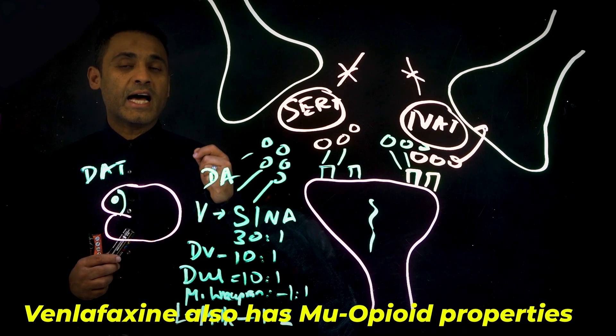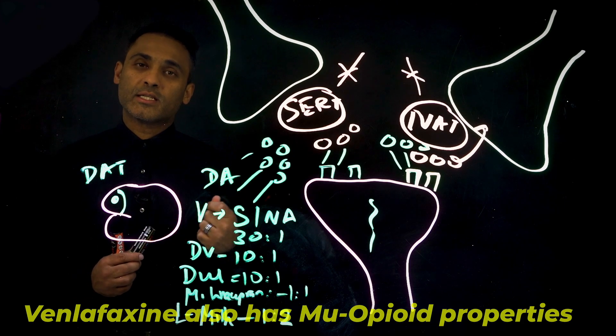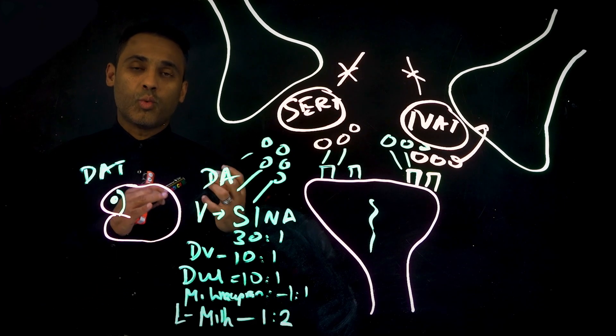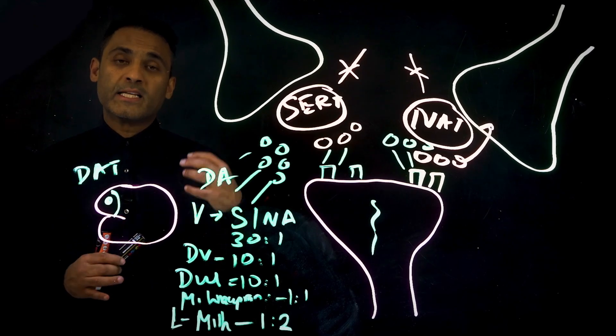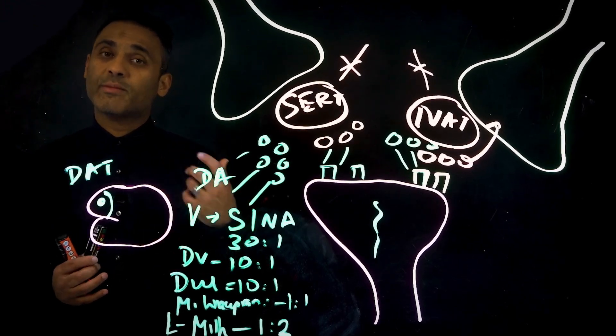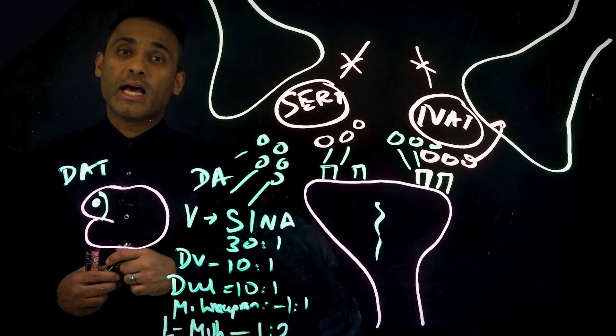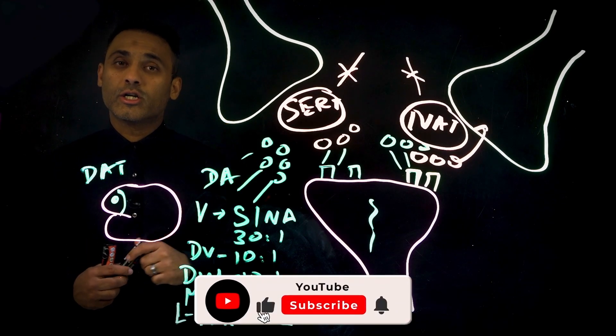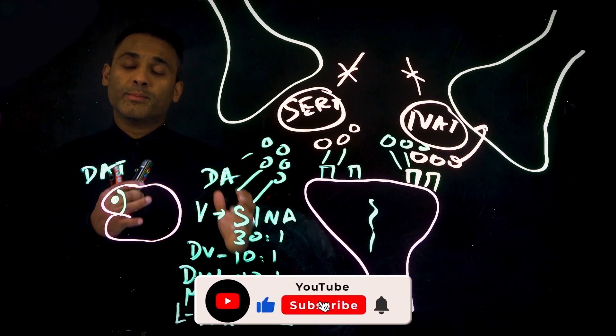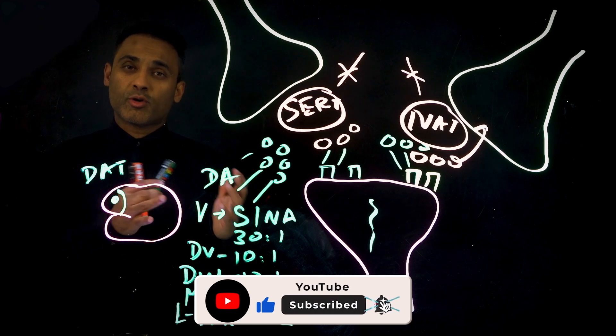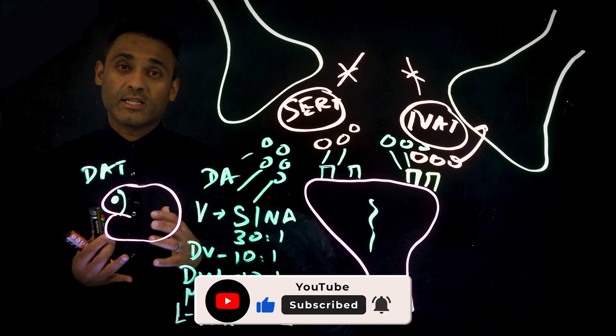Venlafaxine also has mu-opioid properties and this may be one of the reasons why its withdrawal is amongst the most significant, similar to paroxetine as well. Paroxetine has some anticholinergic properties which is probably what makes the withdrawal of paroxetine and the withdrawal of venlafaxine quite significant.